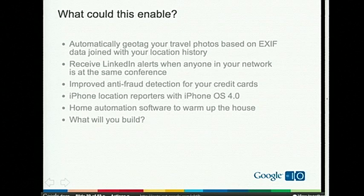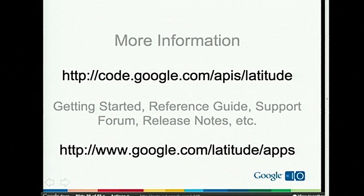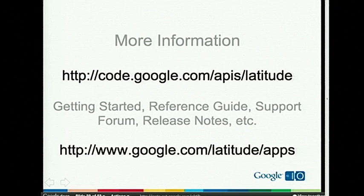There's also a fun example: if you're driving home and your home automation software realizes you're 20 miles away, it turns on the heat so your house is warm by the time you get home. Full developer documentation is at code.google.com/api/latitude, with support forums, release notes, and a reference guide. If you're interested in existing Latitude applications including location history and location alerts, you can visit the Latitude apps URL.